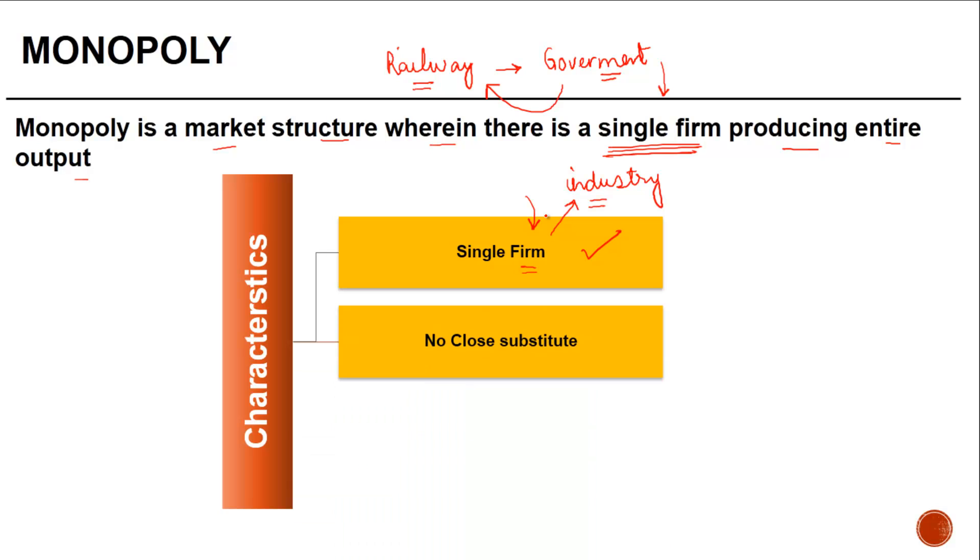There are no close substitutes. In case of mobiles, there are various firms which produce mobiles. Even if one firm produces type A of a mobile, the other one produces type B - this can act as a substitute. But in case of monopoly, the product which is produced by the monopolist does not have a close substitute, which means people cannot switch from one product to the other.